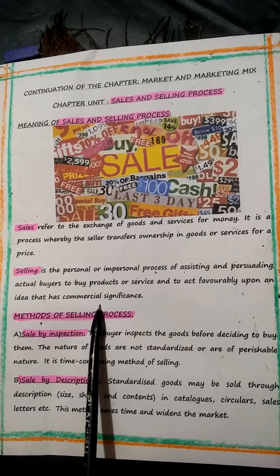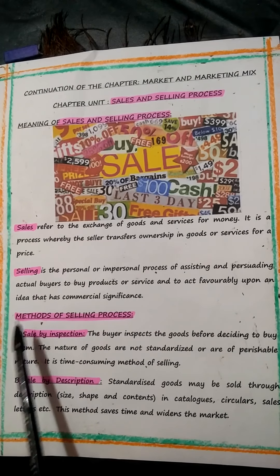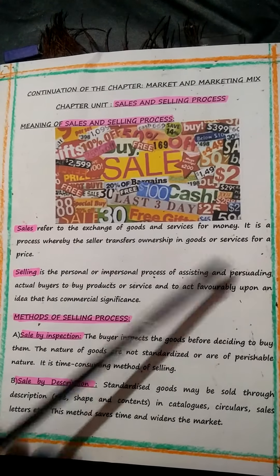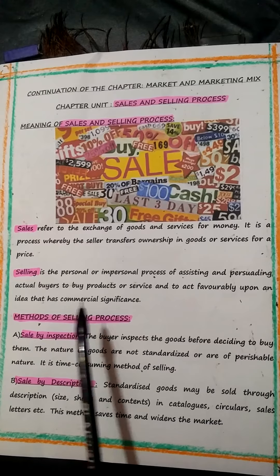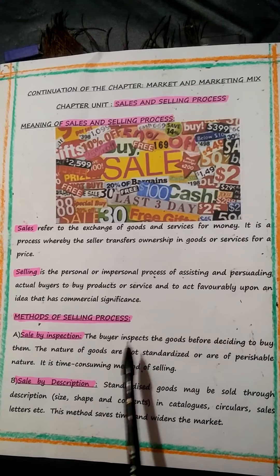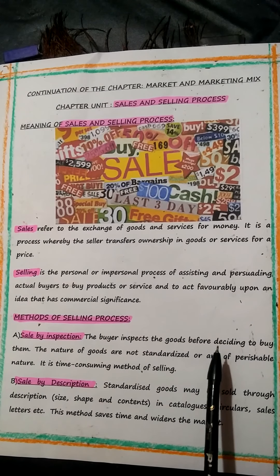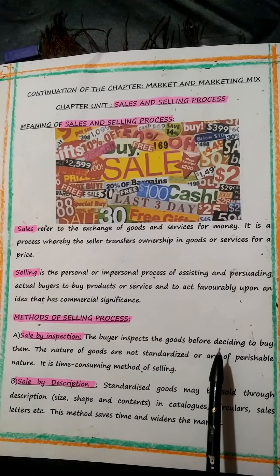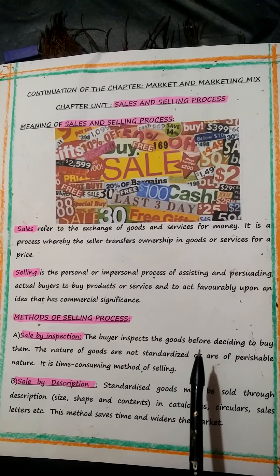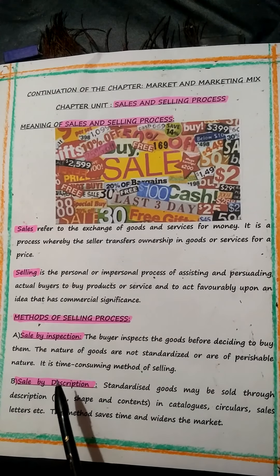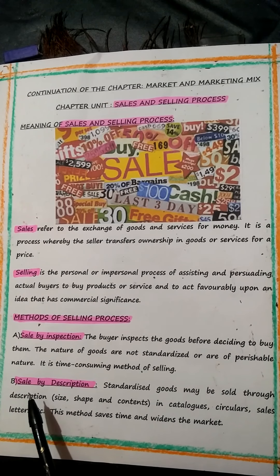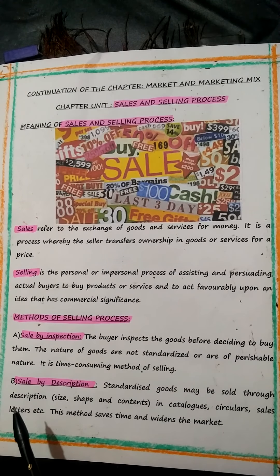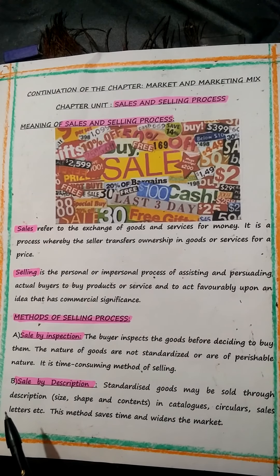Commercial significance is money value. Next, we move on to the methods of selling process. There are three methods. The selling process involves a sequence of steps in the conversion of human desires into demands for a product or service. The three methods are: sale by inspection, sale by description, and sale by sample.